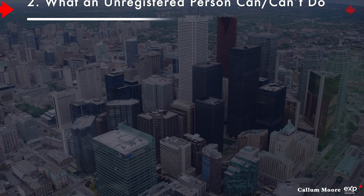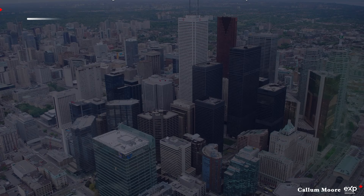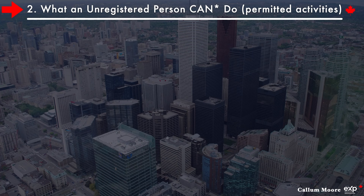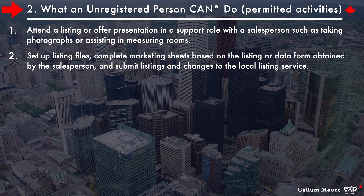Second on the list: what an unregistered person can and can't do. This will directly relate to the job you can potentially apply for, and of course it will be on the exams. Starting with permitted activities for an unregistered person: One, attend a listing or offer presentation in a support role with a salesperson, such as taking photographs or assisting in measuring rooms. Two, set up listing files, complete marketing sheets based on the listing or data form obtained by the salesperson, and submit listings and changes to the local listing service.